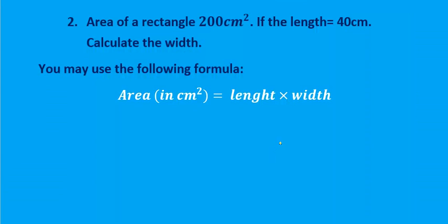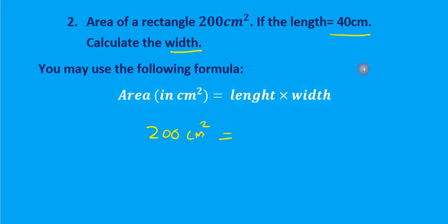Here's another inverse question: the area of a rectangle is 200 centimeters squared, the length is 40 centimeters, and you have to calculate the width. This is an inverse question because they give you the area formula but they're not asking you to calculate the area — they've given you the area as 200 centimeters squared and the length as 40 centimeters, and you must find the width.